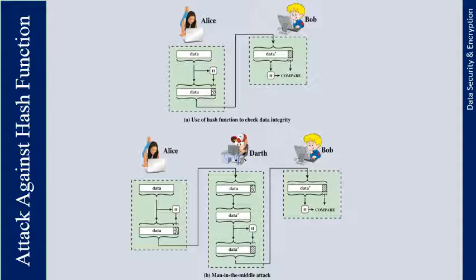The use of a hash function for message integrity works as follows: the sender computes a hash value as a function of the bits in the message and transmits both the hash value and the message. The receiver performs the same hash calculation on the message bits and compares its value with the incoming hash value. If there is a mismatch, the receiver knows the message has possibly been altered. The hash value must be transmitted in a secure fashion — it must be protected so that if an attacker alters the message, it is not feasible to also alter the hash value to fool the receiver.